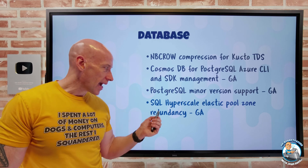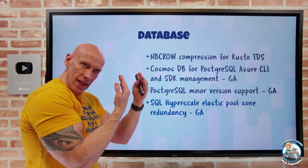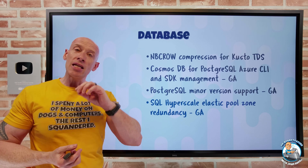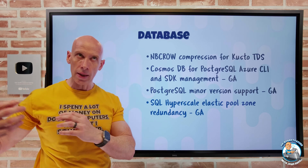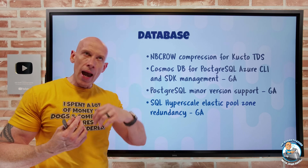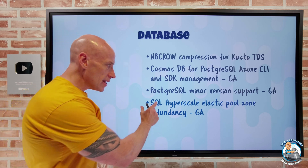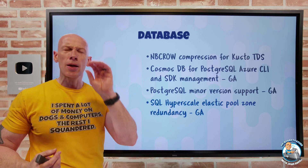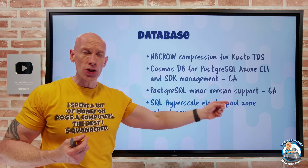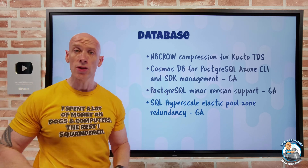SQL Hyperscale Elastic Pool now has zone redundancy. Zone redundancy uses the availability zones in a region — each subscription sees three availability zones with independent power, cooling, networking, and control plane. Something bad can happen in an entire data center, but if you're using zone redundancy, your instance remains resilient. SQL Hyperscale — where compute, page service, and log service are separated — now has an Elastic Pool version that allows multiple database instances to share a pool of resources with zone redundancy support.